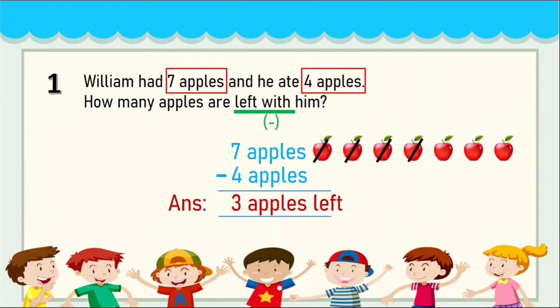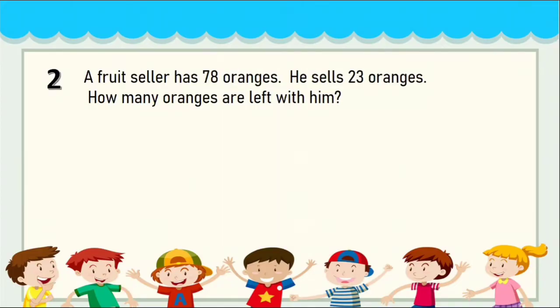Next question is a two-digit number. A fruit seller has 78 oranges; he sells 23 oranges — how many oranges are left with him? The word 'left' is there, so it's a subtraction problem. For a two-digit number you write ones and tens. For a three-digit number you also write hundreds. Write the first number: 78 oranges — highlight it.